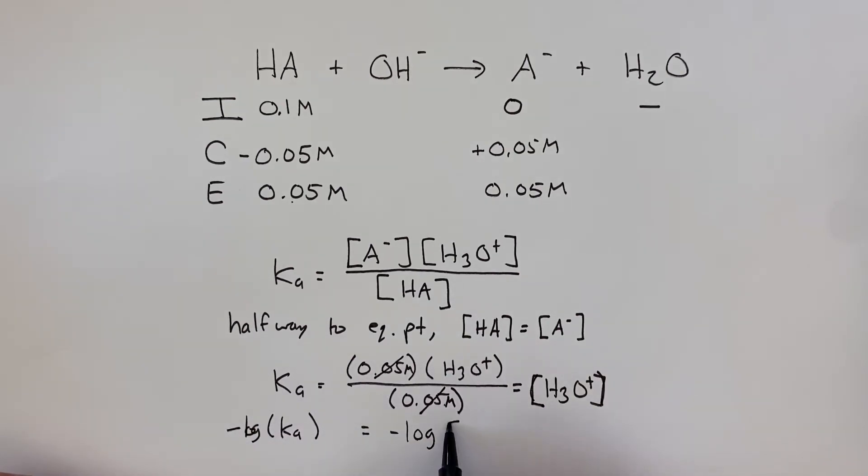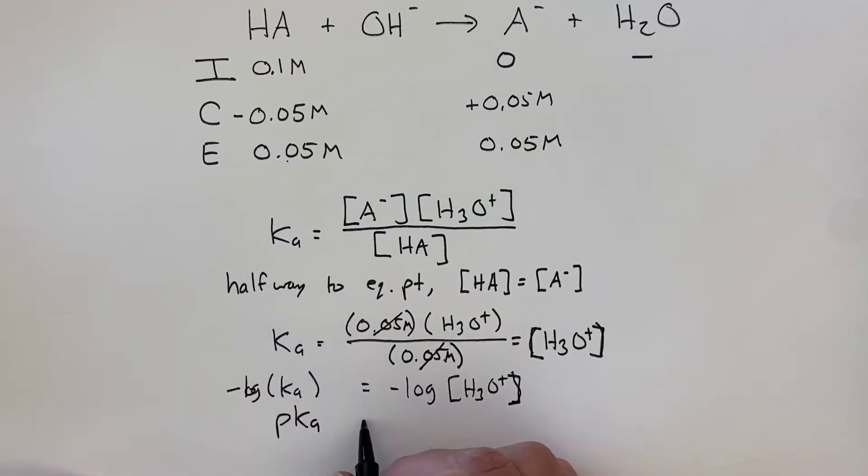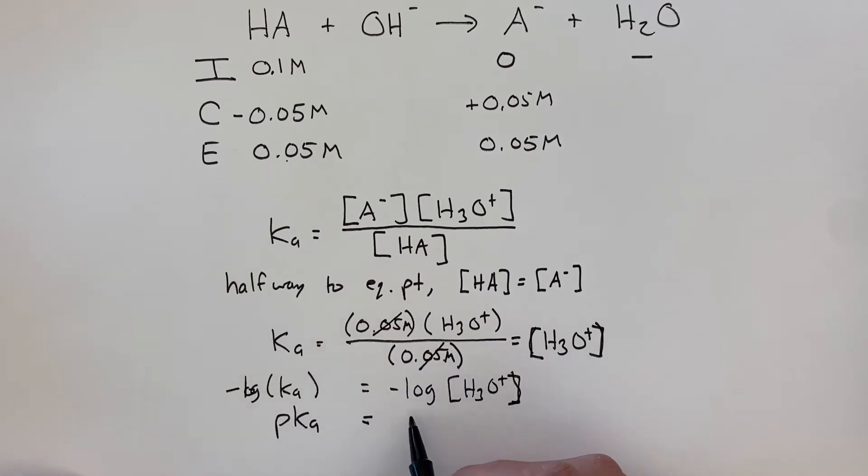Negative log of the H3O plus concentration - what I get is that the pKa of my weak acid is actually equal to the pH of the solution halfway to the equivalence point.